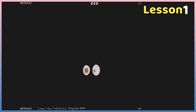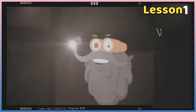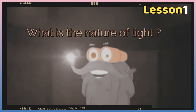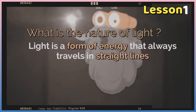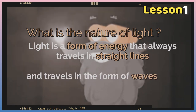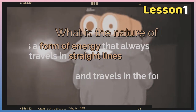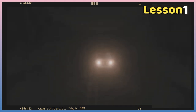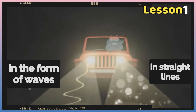It's dark here, I can't see anything. This is because there is no light. What is the nature of light? Light is a form of energy that always travels in straight lines and in the form of waves. Look at this card — this is how light travels in straight lines and in the form of waves.